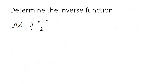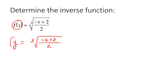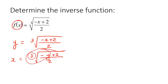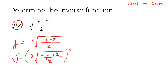Let's do another one. First step, just replace this with a y — everything else you can keep the same. Next step, switch this letter and this letter around. So we can say x equals the cube root of negative y plus 2 over 2. Now we need to get this y by itself, but first we've got to get rid of this 3 — this is a cube root. The opposite of a root is a power, so we'll raise both sides to the 3rd power, because what you do to one side you're allowed to do to the other. This 3 completely cancels out this root.